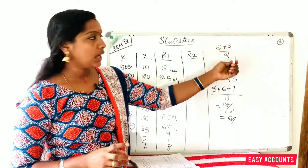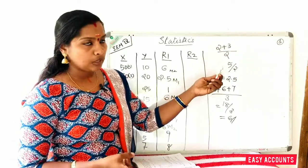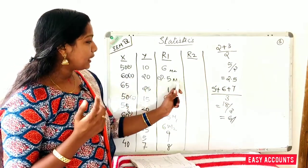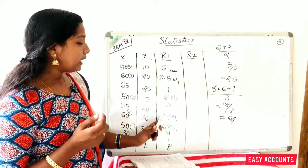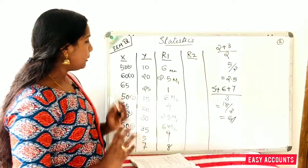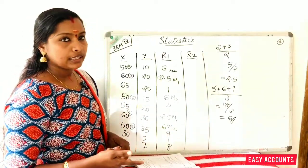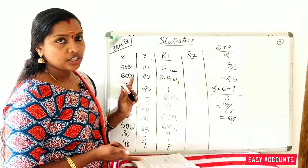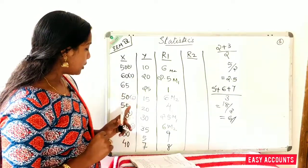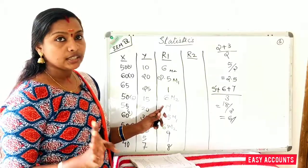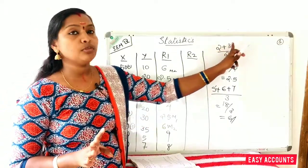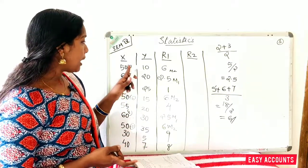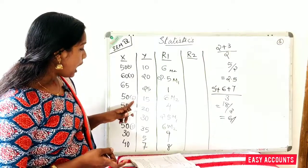For the tied group: 2 plus 3 divided by 2 equals 2.5. So rank 2.5 is assigned. Then 2.5, 2.5, 2.5 for repeated values. Then 3.5, 3.5 for the next tie group. Then rank 4, then rank 4.5.